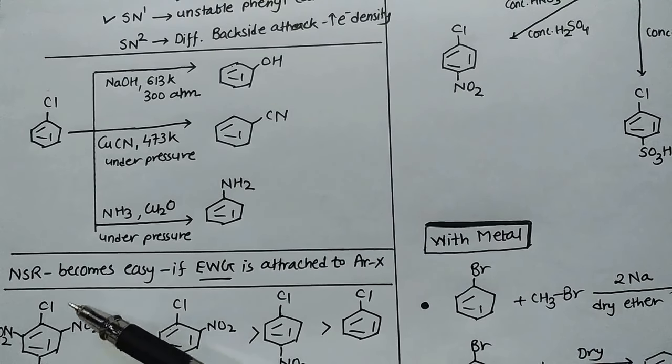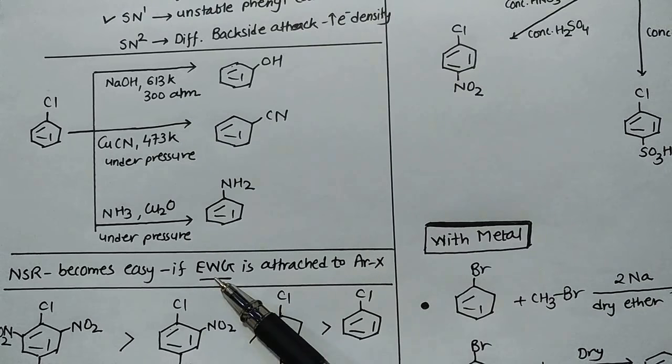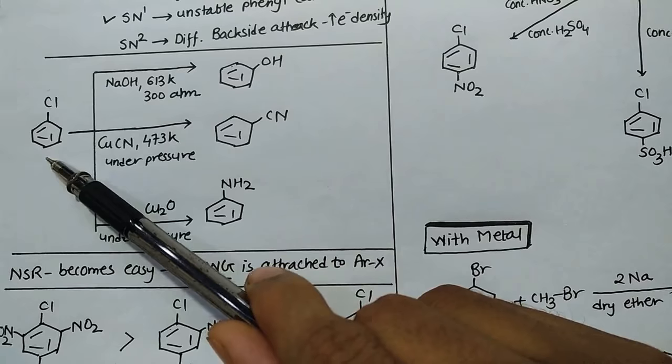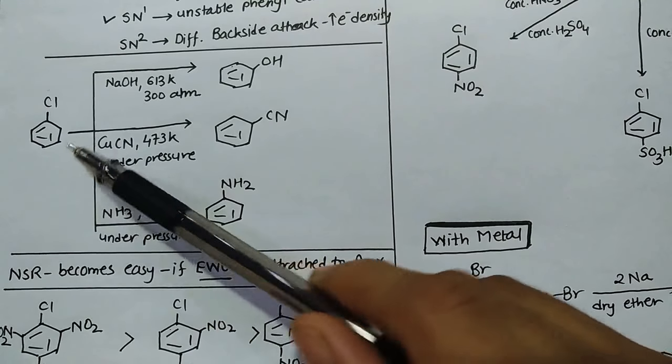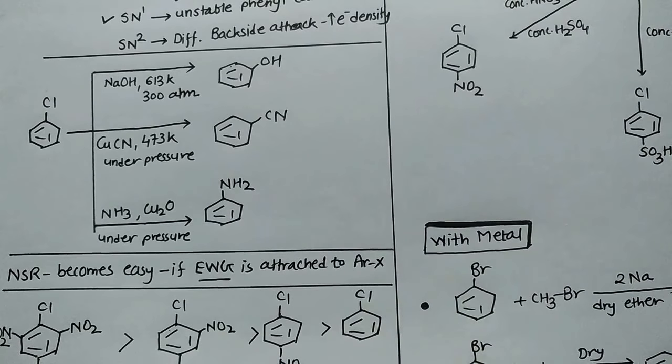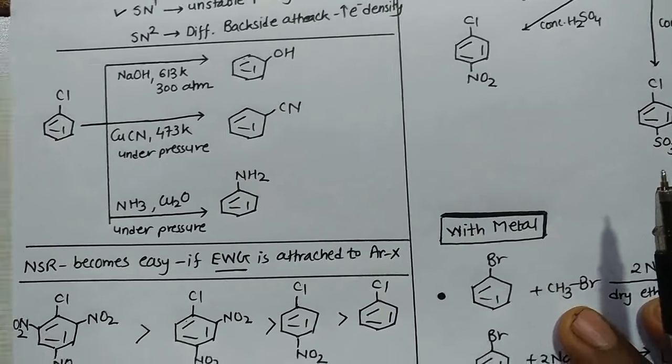If we talk about benzene Ar-X, NSR can take place but only if you provide high temperature and high pressure. Same way with ammonia, you will get aniline, but again this reaction requires high temperature and under high pressure. So NSR is very difficult. But we can do NSR on chlorobenzene if this group gets an electron withdrawing group. If chlorobenzene has electron withdrawing group at ortho or para position, the electron withdrawing group will pull electrons, which makes it easier for nucleophile to attack. So electron withdrawing group will make NSR possible.